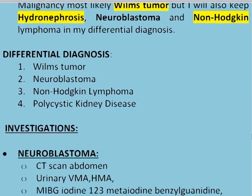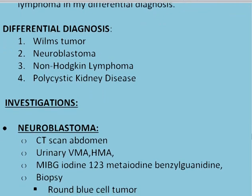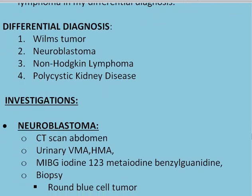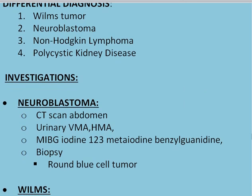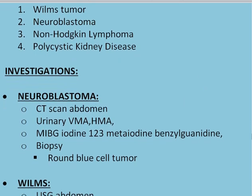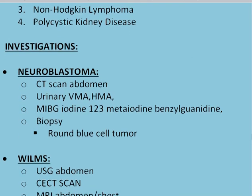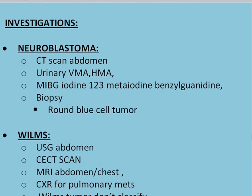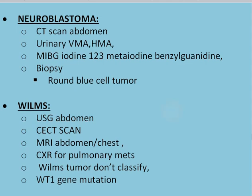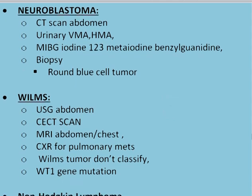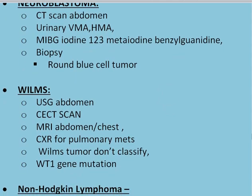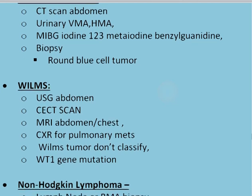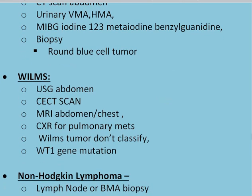Investigations depend upon the tumour type. In case of neuroblastoma, you do CT scan abdomen, urinary VMA, HMA, MIBG (meta-iodobenzylguanidine) scan, and biopsy — which shows round blue cell tumour and is diagnostic. In Wilms tumour, you do ultrasound, CT scan abdomen, MRI of abdomen or chest, and chest X-ray for pulmonary infiltrates. Remember Wilms tumour doesn't calcify. You can also check for the Wilms tumour gene — WT1 gene mutation. This is also associated with congenital nephrotic syndrome, so you have to look for that.